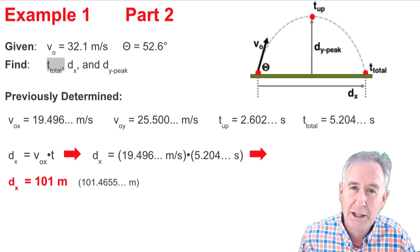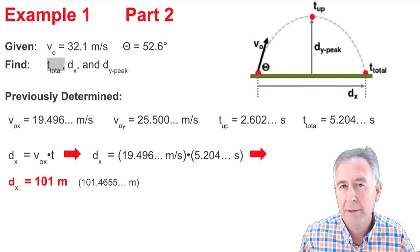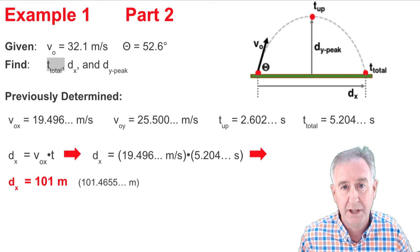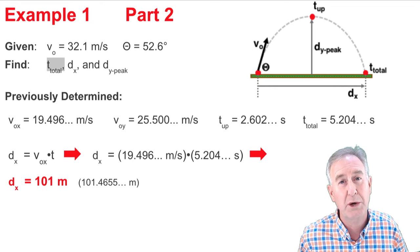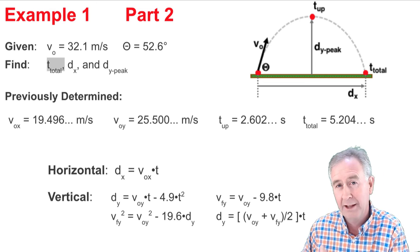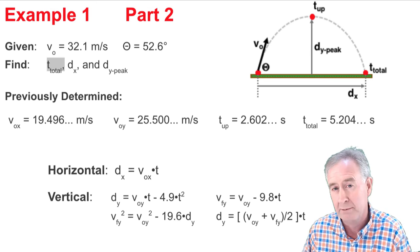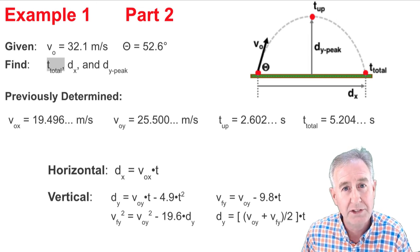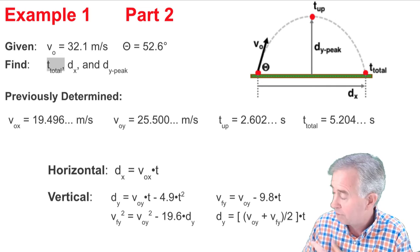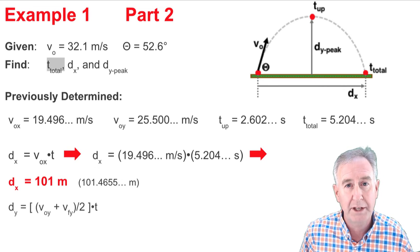Now I have to find the DY at the peak. Now what we're talking about there is, if you refer to the diagram again, we're talking about the vertical distance when the time is the halfway time, when it's the 2.602 seconds. So here's your equations for calculating projectile problems. And there's three of these vertical equations that have DY in them. Now you can use any one of them. But the one I favor is the one here on the bottom right. So I'm going to write that formula down.